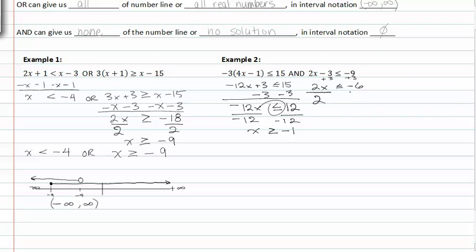On this side, dividing both sides by two will give us x less than or equal to negative three.